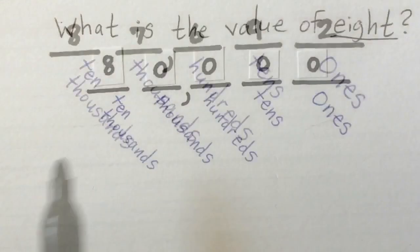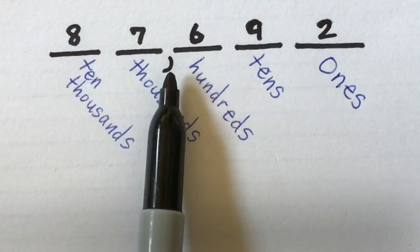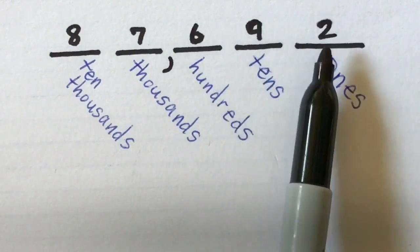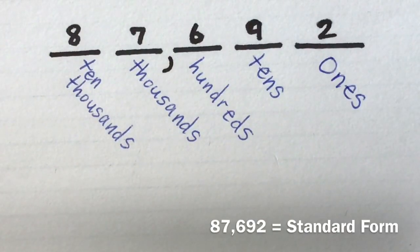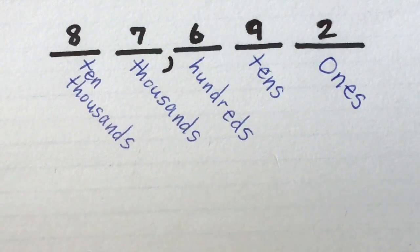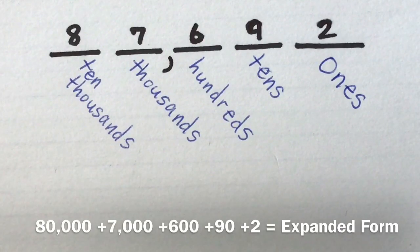Let's say for example we have 87,692. 87,692 is written out in standard form. Let's say we wanted to write it out in expanded form. Expanded form is when you see all the plus signs.